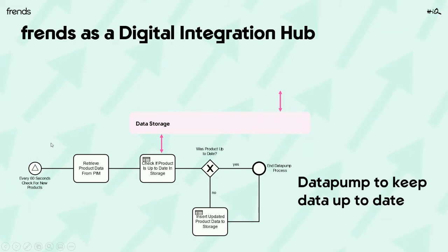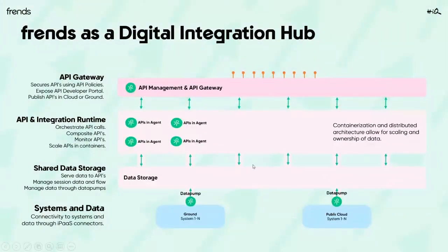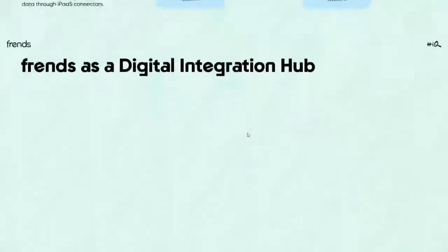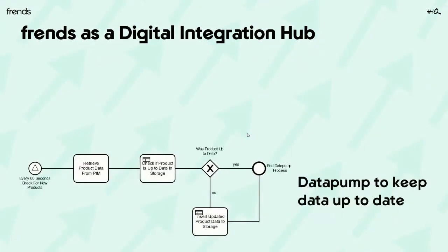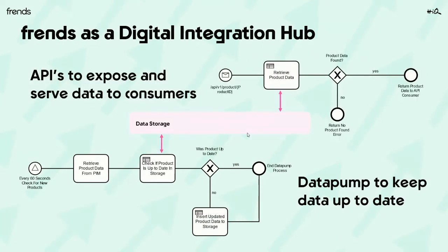Here's a simple example using a product information management system: we check every 60 seconds if any new products have been created, and if so, we synchronize the data storage to reflect that new product or product update. For the API layer on top, we use exactly the same process-based approach to define how we serve that data from the data storage to our API consumers — returning all data available for a given product ID queried through our API gateway.